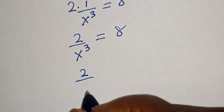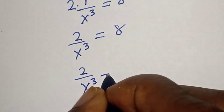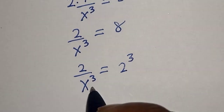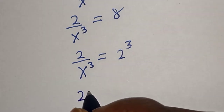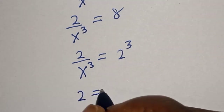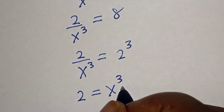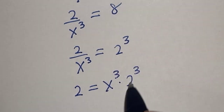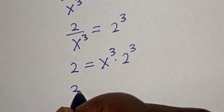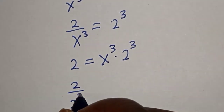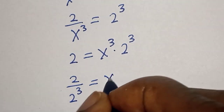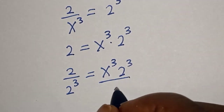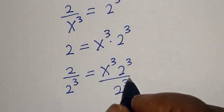This is 2 over s raised to power 3 is equal to 8, then 2 raised to power s raised to power 3 is equal to 2 to the power of 3. Now let's cross multiply: we have 2 is equal to s raised to power 3 multiplied by 2 to the power of 3. Now let's divide both sides by 2 raised to power 3. We have 2 divided by 2 to the power of 3 is equal to s raised to power 3, and 2 raised to power 3 divided by 2 raised to power 3 — this will cancel.